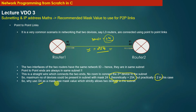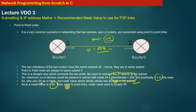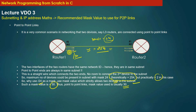So why use /24 as a mask? We should use the mask value which strictly allows only two devices to be present in the same subnet when the link is a point-to-point link. Such a mask value is 30. In case of point-to-point links, while assigning IP addresses, mask value /30 is usually used. Though using /24 is also a valid configuration, it is a recommendation to use /30. It is just a good practice to use /30 as a mask value for point-to-point subnets.